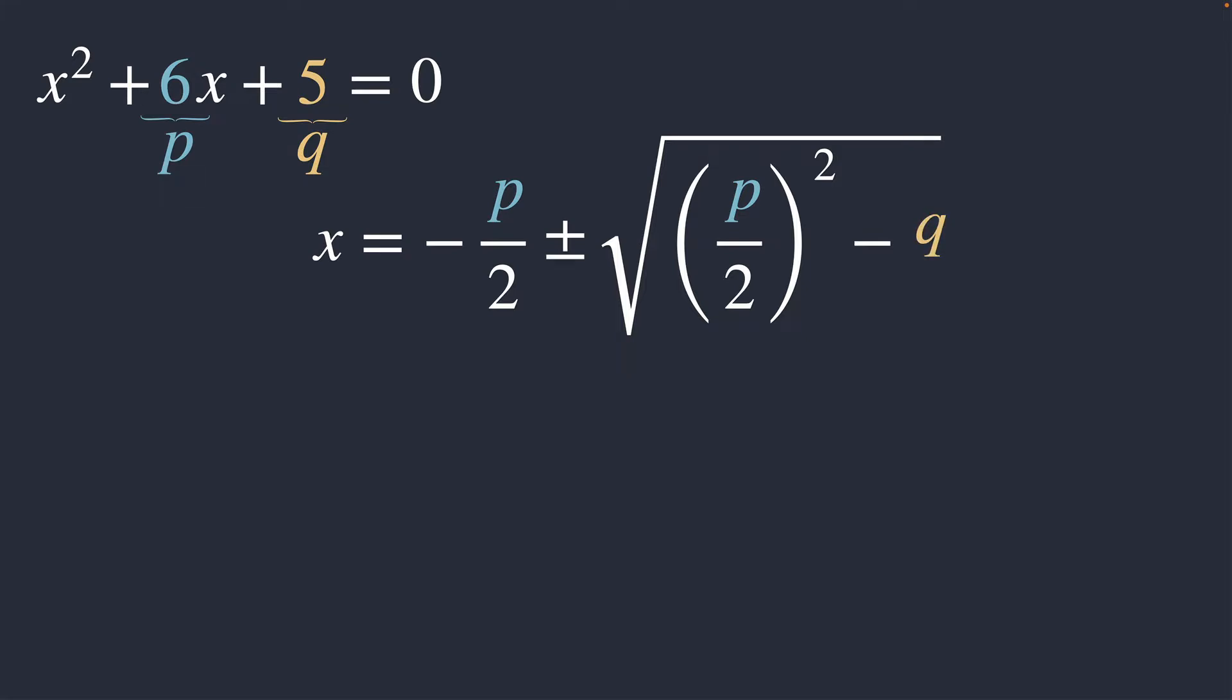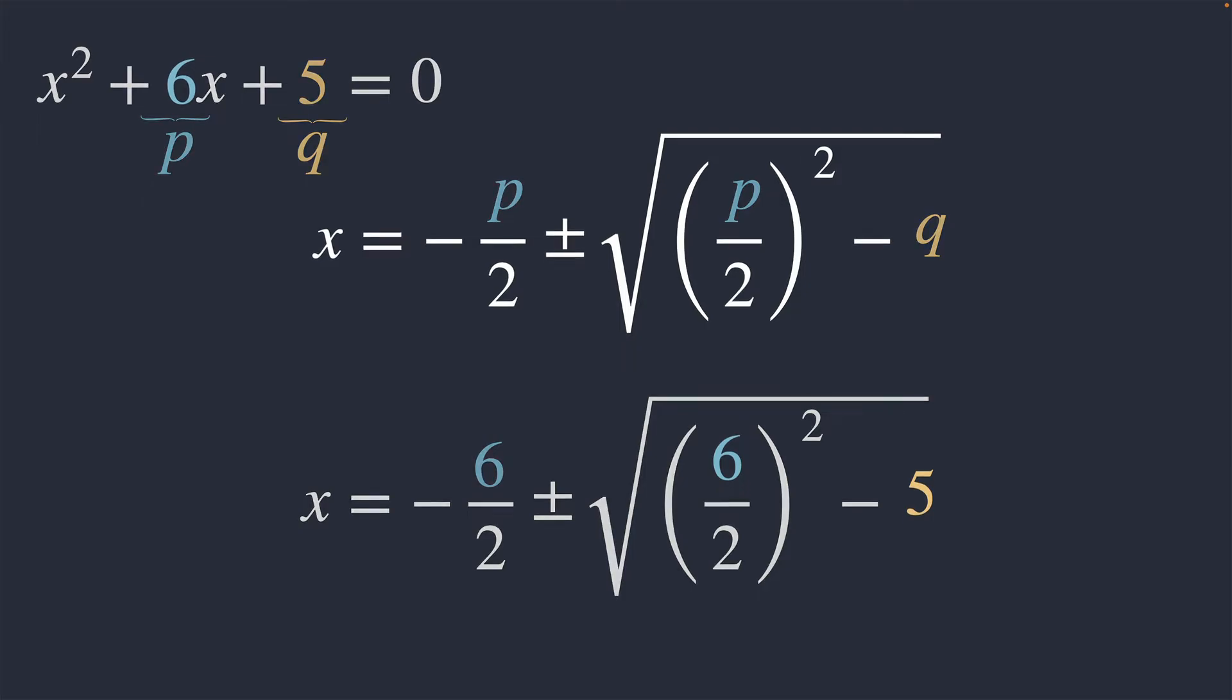What we need to do now is take our specific values and substitute them into this formula. So, what was our value of P? What was our coefficient of the x term? Well, that was 6, so we're going to substitute that in. Next, we need to substitute our value of Q, which is 5, and all the substitution is done.